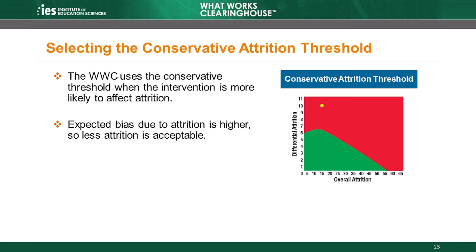Dropout prevention is another good example. Attrition in studies of dropout prevention interventions may be linked to what the interventions are trying to affect — dropping out itself. Students who drop out may be more difficult to track or less likely to respond in data collection efforts, which means high rates of missing data may yield a skewed measure of the difference in dropout rates between the intervention and comparison groups. In this case, the review team leadership selected the more conservative threshold because the expected bias due to attrition is higher when attrition is related to the outcome of interest.